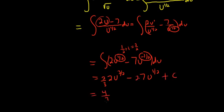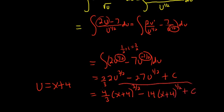This is equal to 4 thirds. And we said u is equal to x plus 4. So it's x plus 4 to the 3 halves minus 14, and then x plus 4 to the 1 half plus c. Sorry, I rushed there at the end, running out of time. That's it.